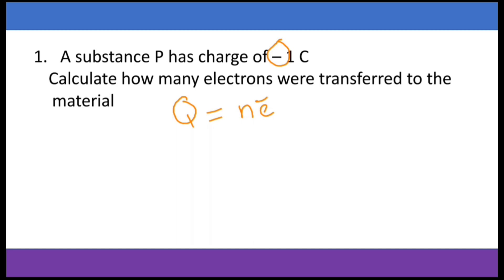Let's rearrange this formula. We want how many, which means a number. So the number there is the n. If we divide both sides by e, we remain with n equals Q over the electron charge. So we are going to have negative 1 over negative 1.6 times 10 to the minus 19. And using a calculator, we get 6.25 times 10 to the power 18 electrons.